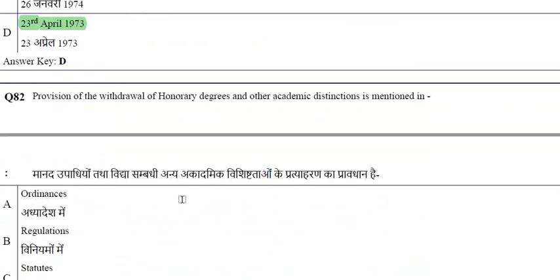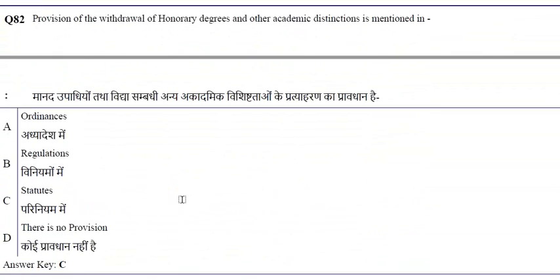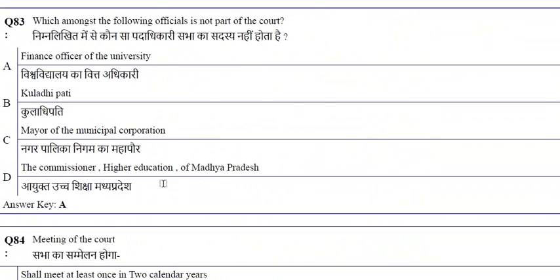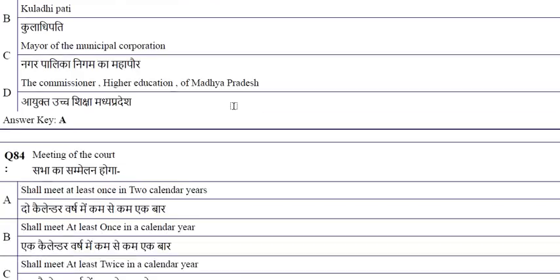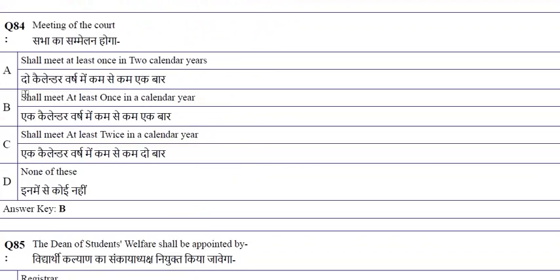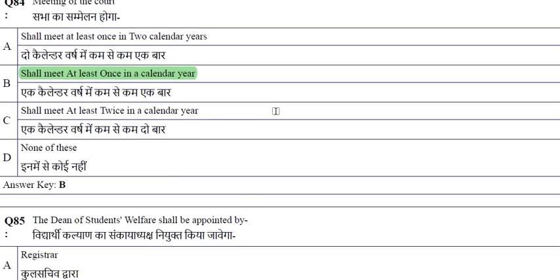The provision for withdrawal of honorary degrees and other academic distinctions is mentioned in the statutes. The finance officer of the university is not part of the court. The meeting of the court shall meet at least once in a calendar year.